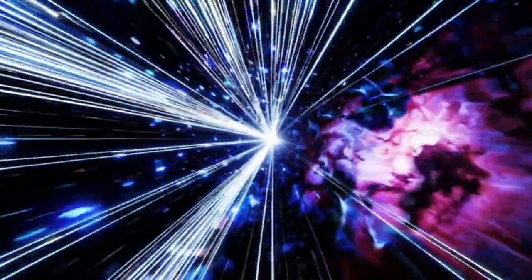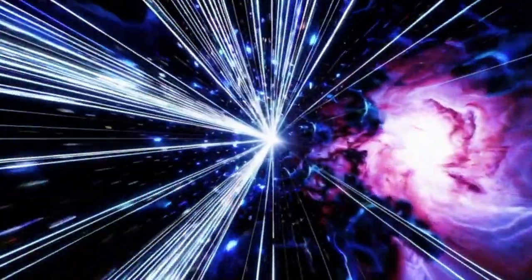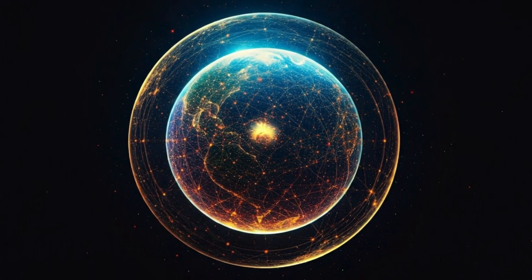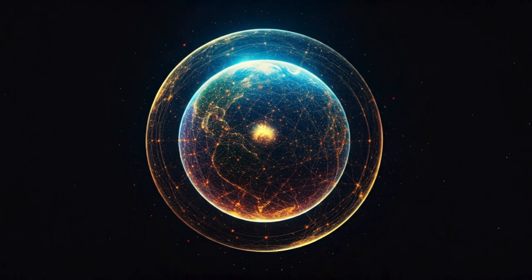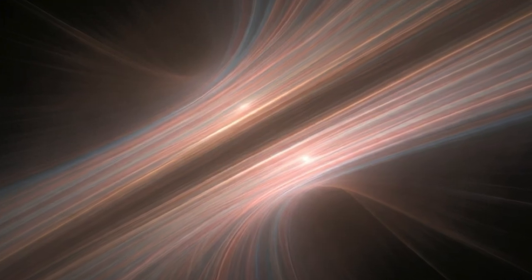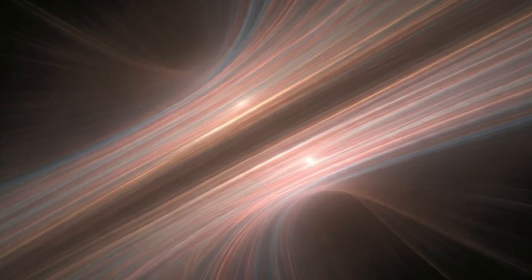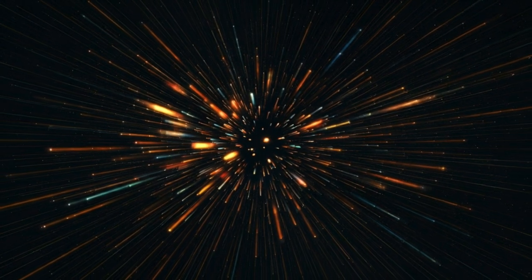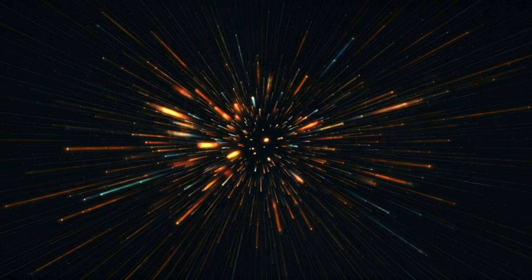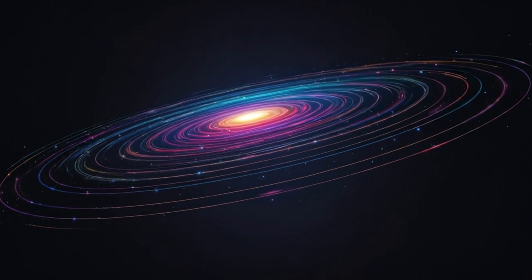But how does this apply to the entire universe? That's a lot bigger than a donut. It is, it's a massive leap in scale, but the principles are surprisingly similar. So instead of donuts and coffee mugs, cosmologists are interested in the shape of space-time itself. Is it flat? Is it curved?